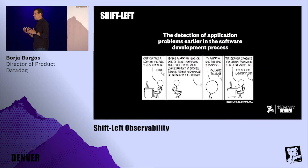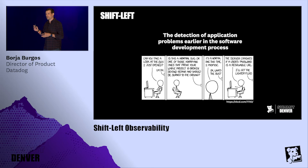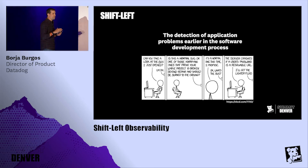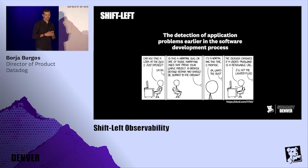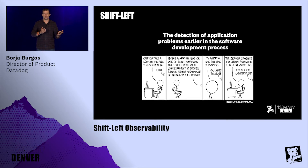So, what is shift left? Shift left really is nothing more than the detection of application problems earlier in the software development process. This is really all that shift left is about — how can we avoid shipping bugs and security issues into production by detecting them earlier in the software development lifecycle?